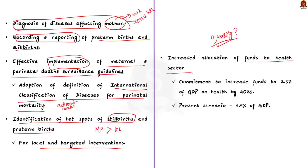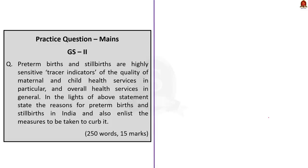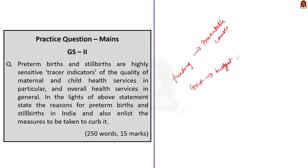Stillbirths and preterm births are highly sensitive indicators of the quality of maternal and child health services. Hotspots should be identified and deaths reduced via targeted measures. Finally, fund allocation to the health sector should be increased. In the National Health Policy of 2017, the government committed to investing 2.5% of GDP on health by 2025, but the government's allocation has increased only marginally to around 1.5% of GDP. The author concludes that India's health system needs more government funding because children are dying from preventable causes, and suggests the government should start by increasing health sector funds in the upcoming budget.